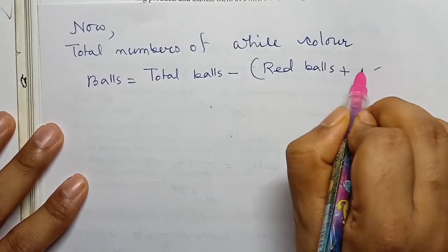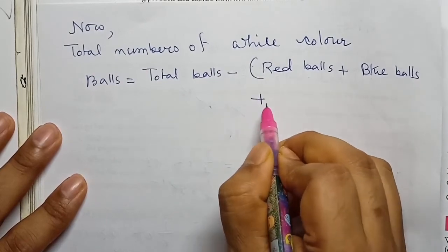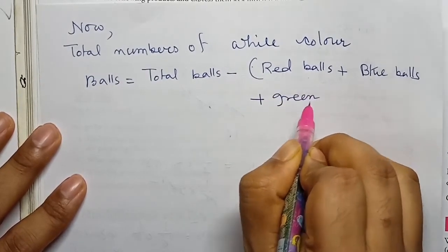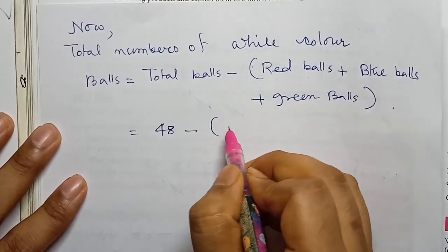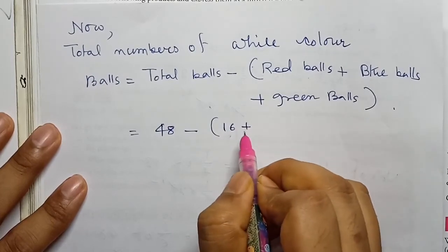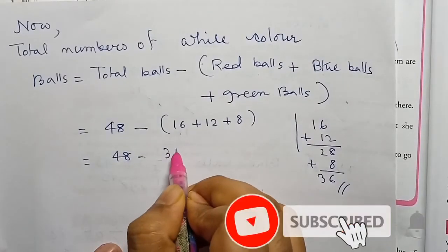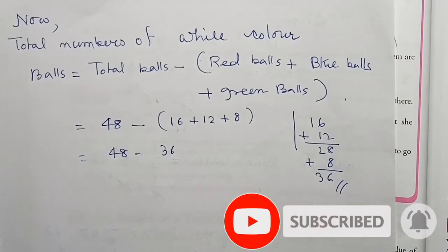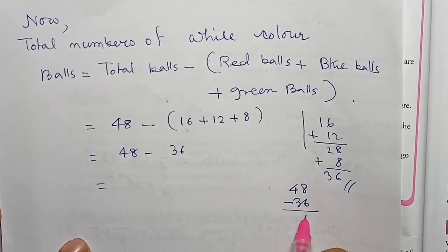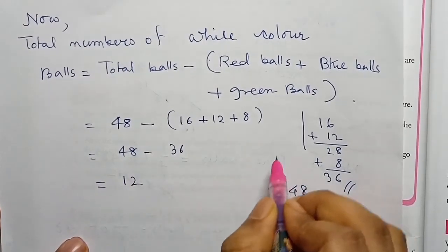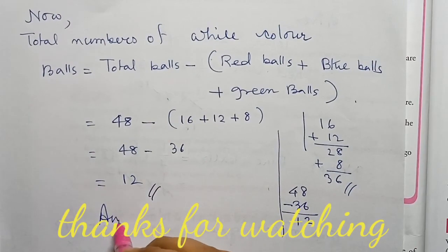White balls = Total balls − (red + blue + green) = 48 − (16 + 12 + 8) = 48 − 36 = 12. Therefore, the total number of white color balls is 12.